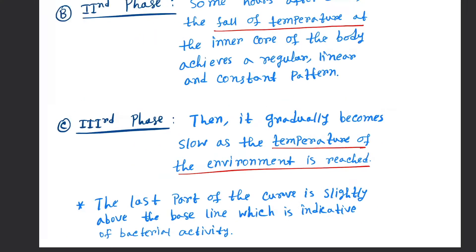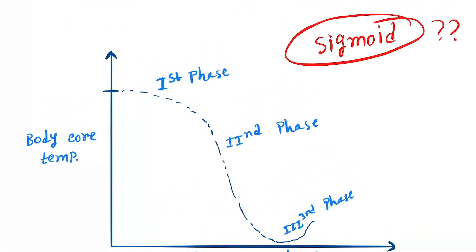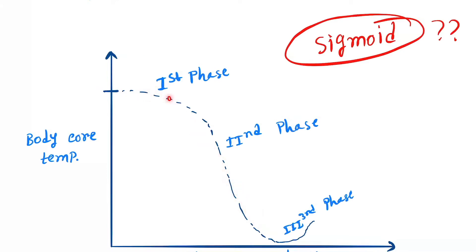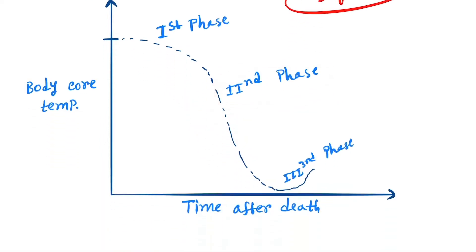Looking at the curve: the first phase shows no loss of inner core temperature and is almost linear. Next, the body core temperature starts to fall — that is the second phase. The third phase is again almost linear, indicating the body has reached the environmental temperature.